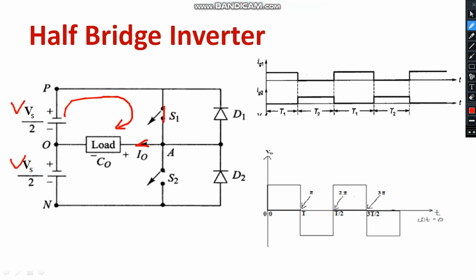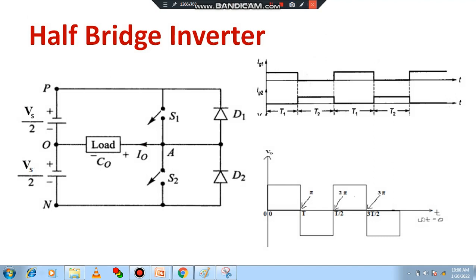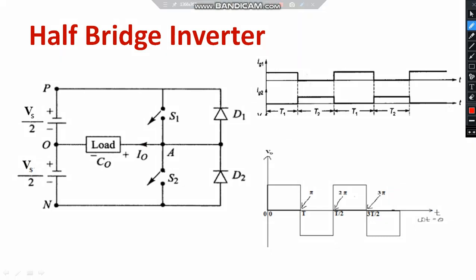On the other side, when S2 is on, the current flows in the opposite direction. The direction of the load current will be negative because the load current and the direction of the current flowing through the circuit are opposite. That is why when switch S2 is on, the load current will be negative.